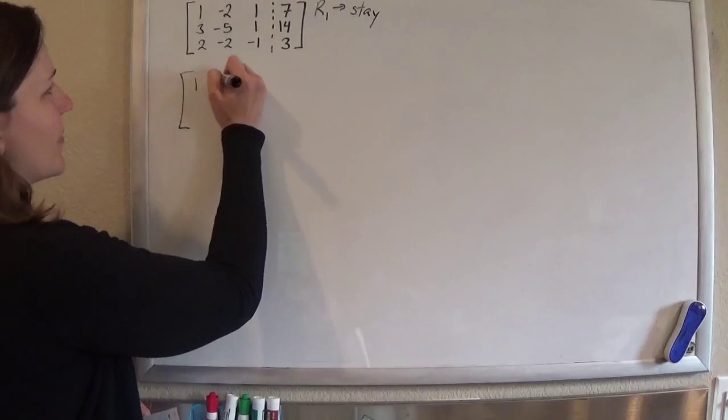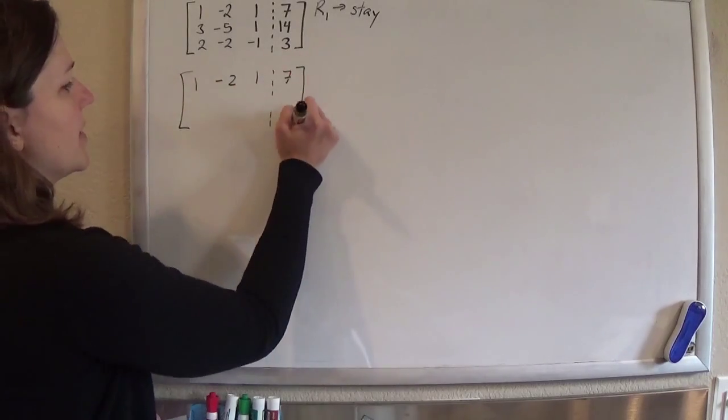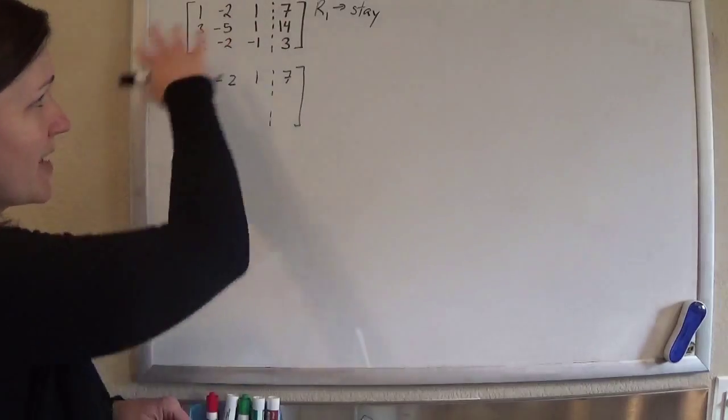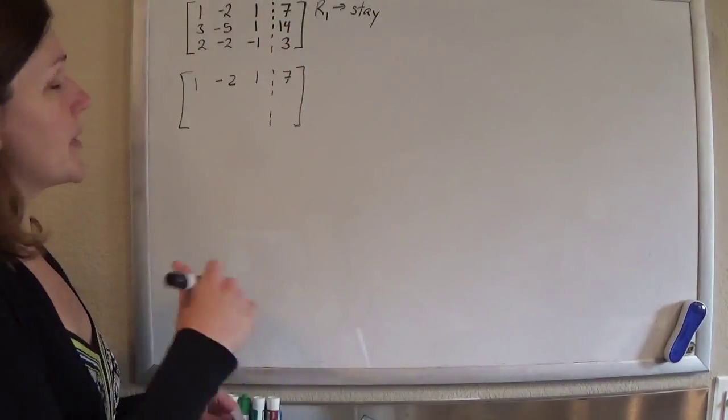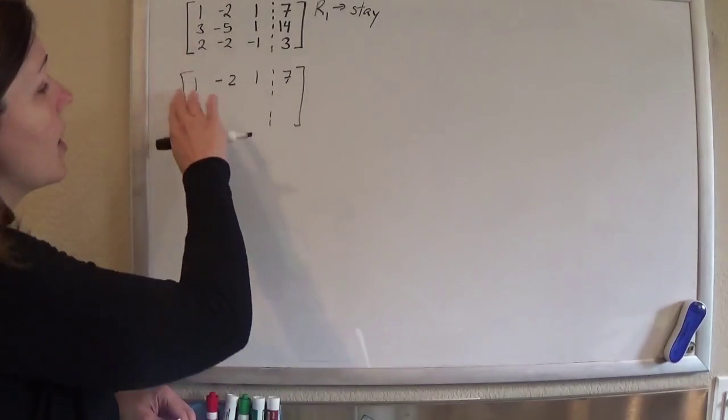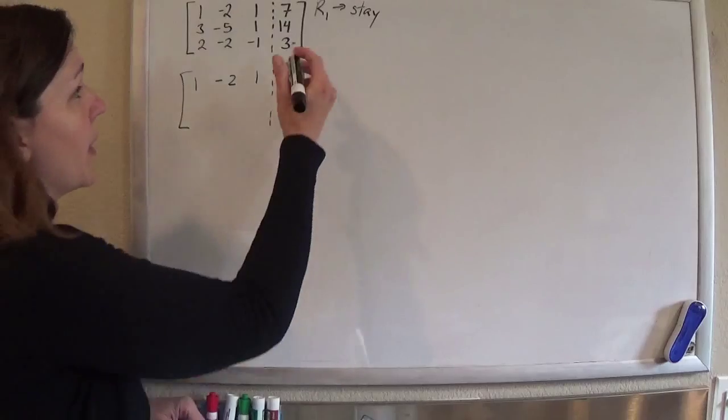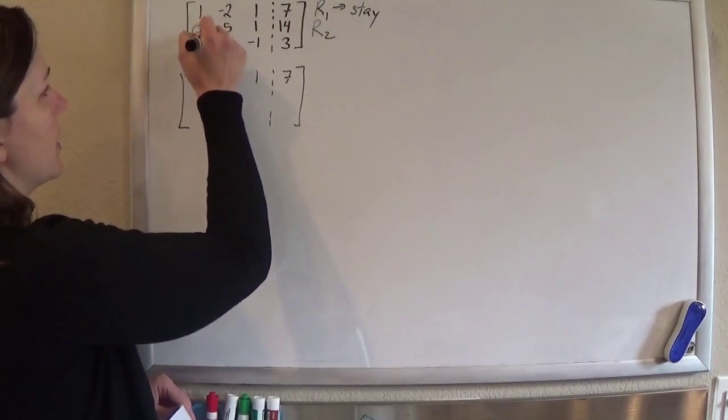This is just kind of how I do it when I'm working with these augmented matrices. If I had this as a normal system of equations, I might try to get rid of the z's first. But since we're still kind of getting used to it, let's go ahead and eliminate the x's first. So we're going to let row 1 stay, and we're going to use row 1 to get 0's in column 1.